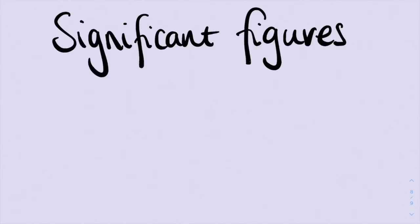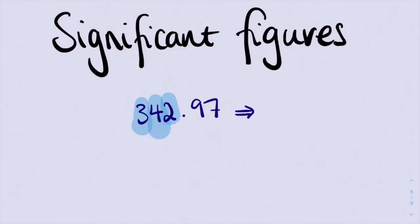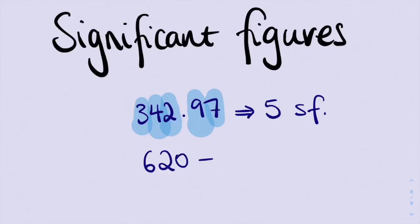We can also count the number of significant figures in a specific number that we've been given. So if I have the number 342.97, we can say that has 1, 2, 3, 4, 5 significant figures. But if I have the number 620, we only have 1, 2 significant figures. That 0 on the end doesn't count as a significant figure because it's on the end.